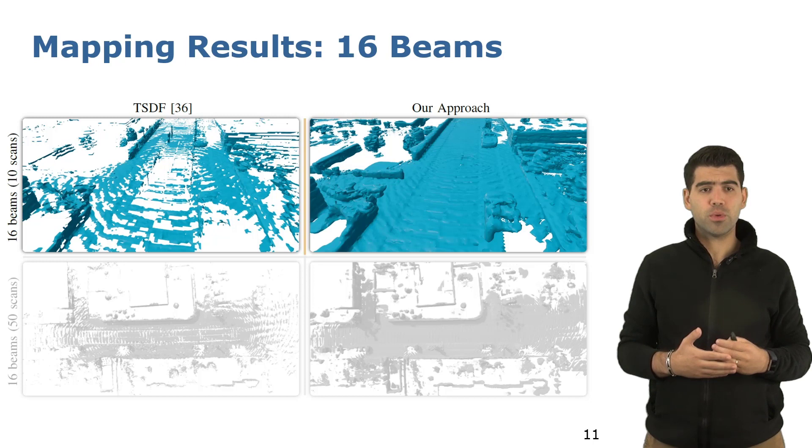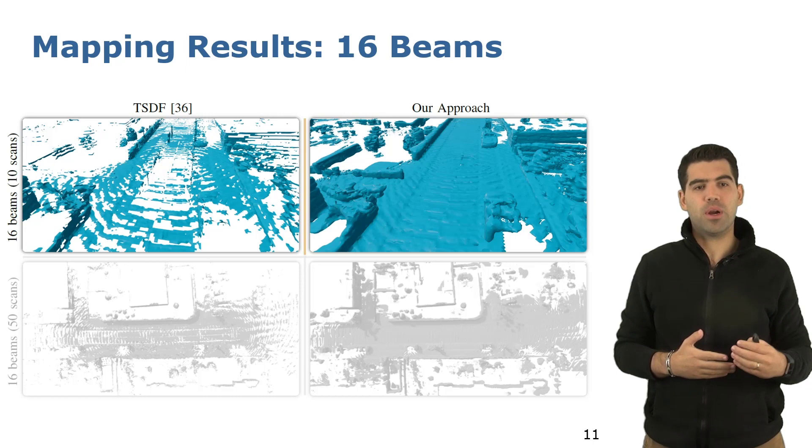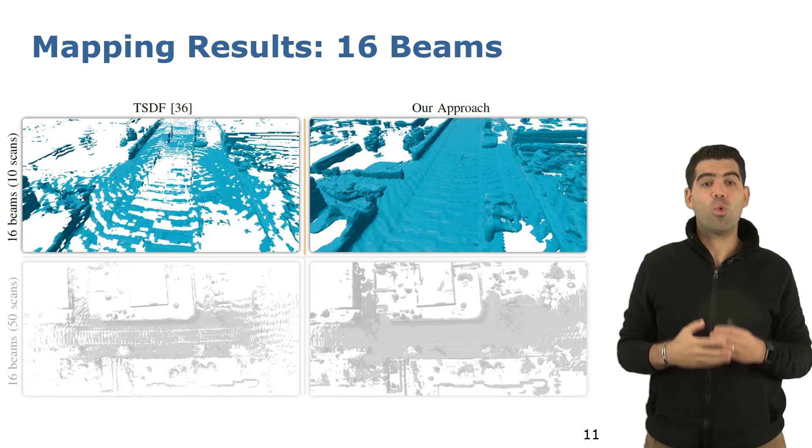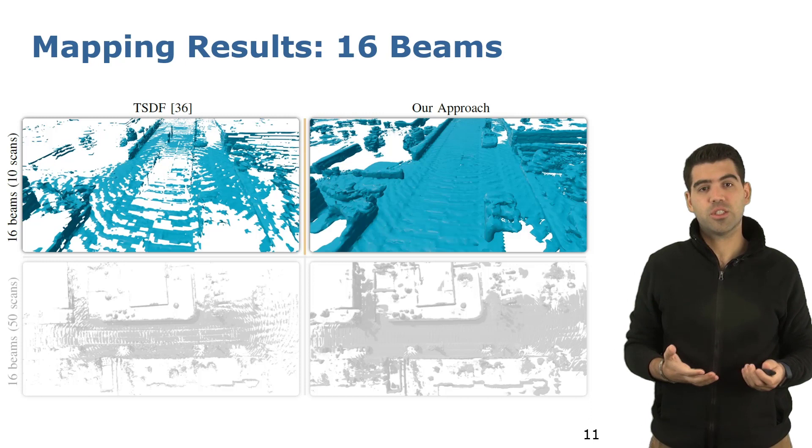When using our approach, shown here on the top right, we obtain a denser map of the environment which exhibits high level of detail. For example, you can spot here the car that is fully reconstructed by our approach. Note that this map was obtained by only using a low-resolution LiDAR and our CNN, as explained before.